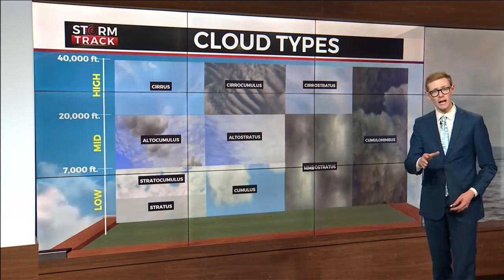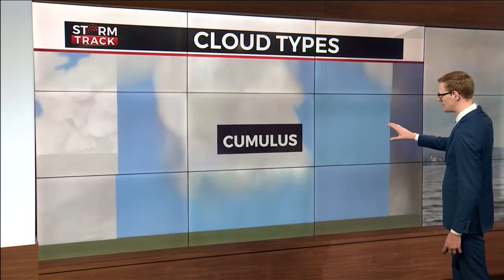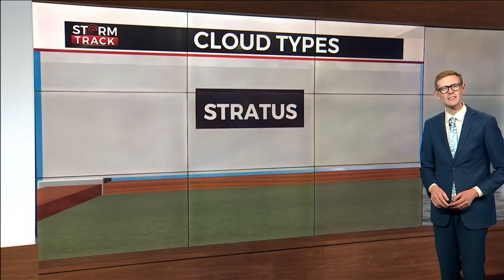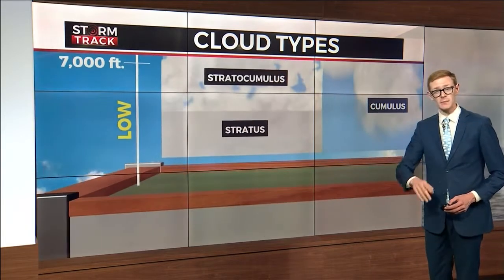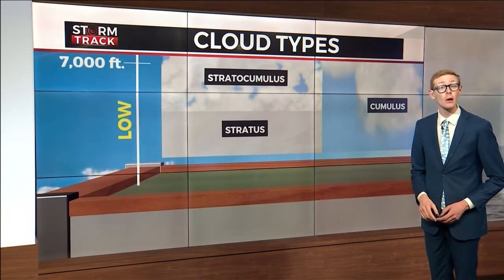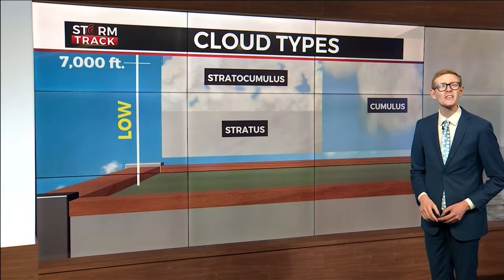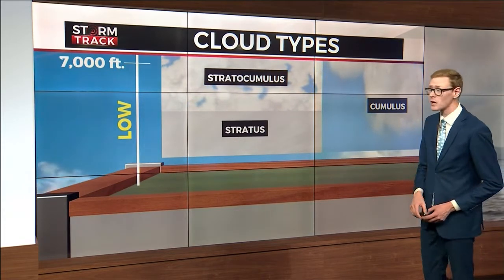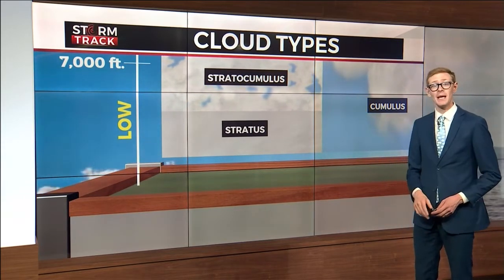A lot of cloud types come back to two root words: cumulus, a round fluffy cloud that is individually defined, and stratus, a uniform sheet of clouds lacking individual definition. Both of these types of clouds are found in the lowest level, at an altitude less than 7,000 feet. Low clouds also include stratocumulus.